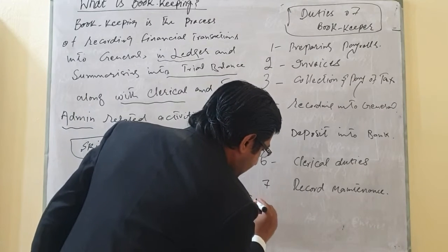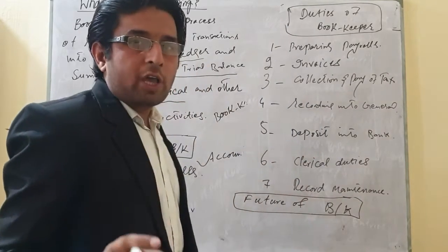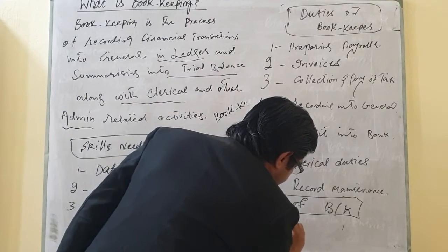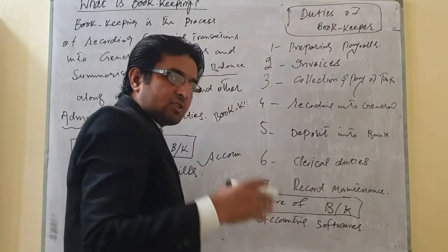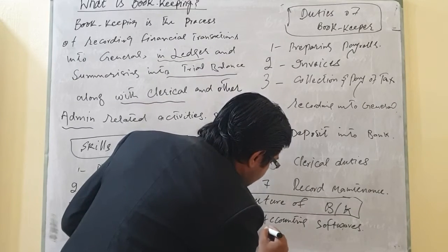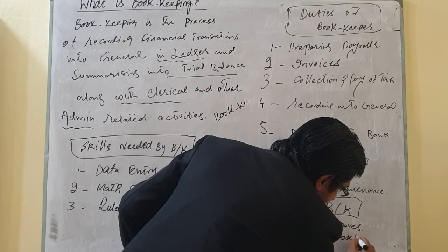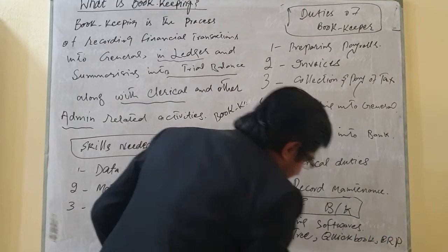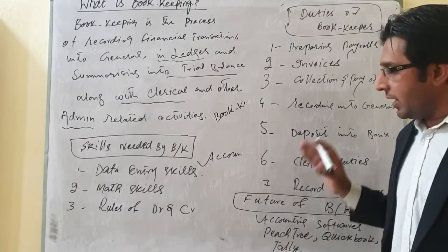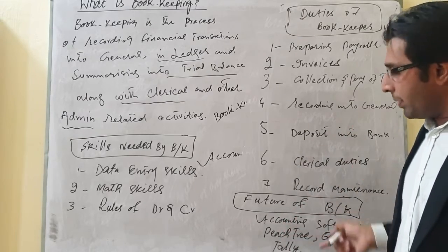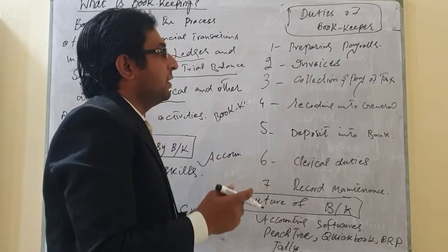Finally, the future of the bookkeeper is now being replaced by accounting software. Different accounting software are used by multinational organizations nowadays, and these softwares work as a bookkeeper. These include Peachtree, QuickBooks, ERB, and Tally. These softwares record transactions, keep records, and prepare payrolls. Whatever is required from the bookkeeper, those requirements are now performed through these softwares. This is all about bookkeeping.